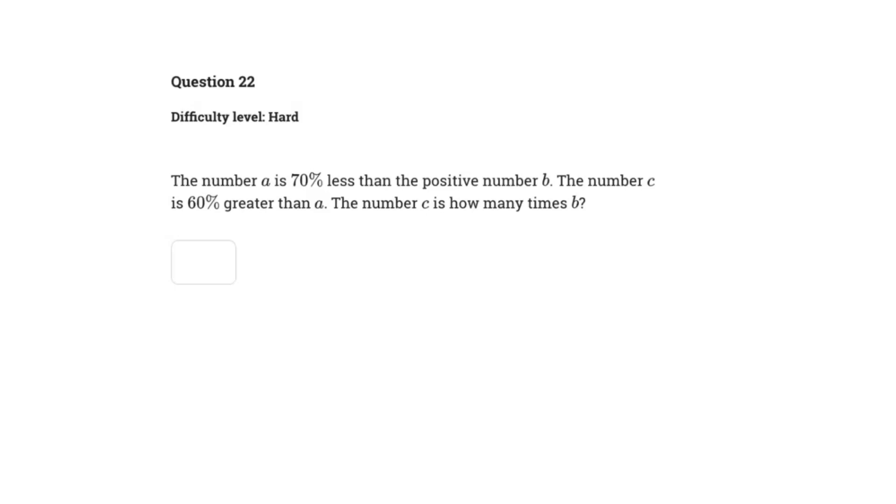Alright everyone, we're back in another SAT math video. This one says number A is 70% less than the positive number B, the number C is 60% greater than A, and the number C is how many times B.